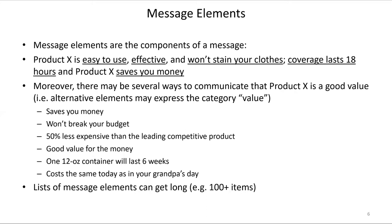Message elements are the discrete components of a message. Here's an example: 'Product X is easy to use, effective, and won't stain your clothes. Coverage lasts 18 hours, and Product X saves you money.' The message elements are: easy to use, effective, won't stain your clothes, lasts 18 hours, and saves you money — five different discrete pieces of communication, five different ideas we want to communicate about Product X. For any one of these, there might be multiple ways to say it, and a lot of my messaging research looks at those multiple ways.